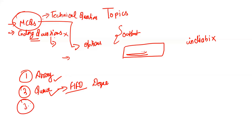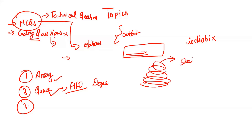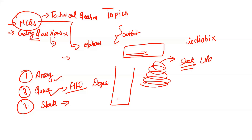It's not just theory — practical implementation questions can also appear. For example: you have placed plates on a table and you want to remove one plate — which data structure does this represent? If you remove from the top, it's a Stack — Last In First Out. Questions about overflow and underflow conditions in a stack, and operations like push and pop, can be asked. For example: push 23, push 24, push 25, pop, pop, push 36 — what is the topmost element? These are basic questions, but you need clear concepts.